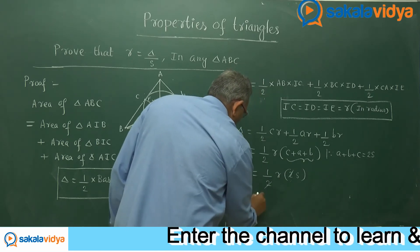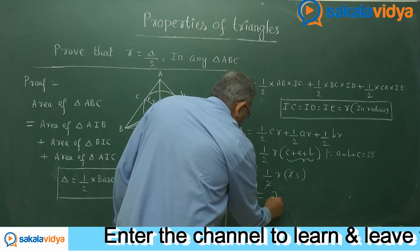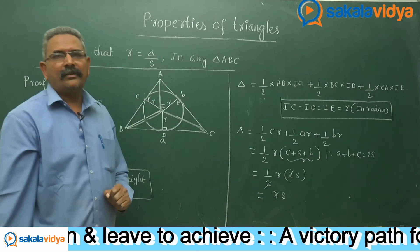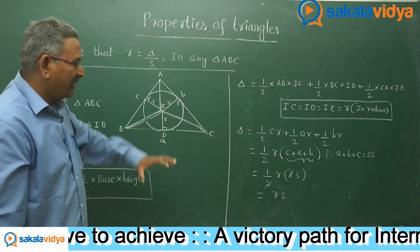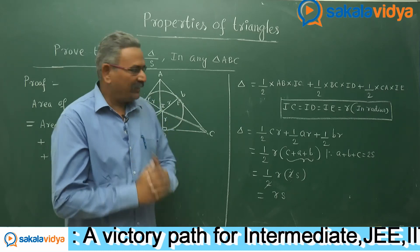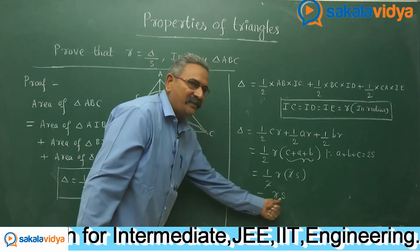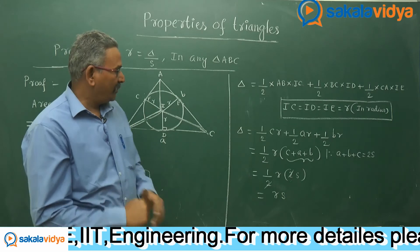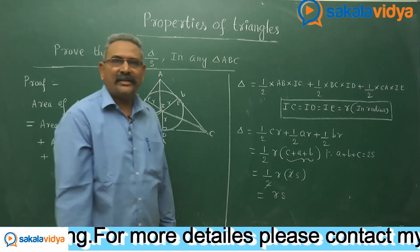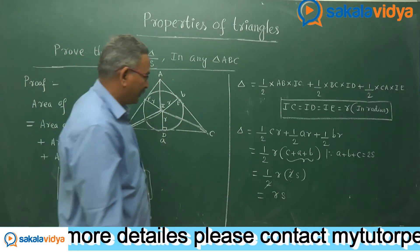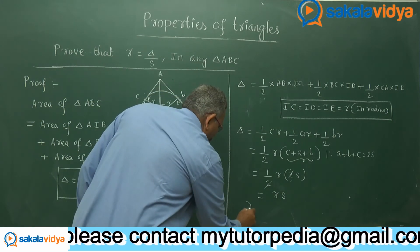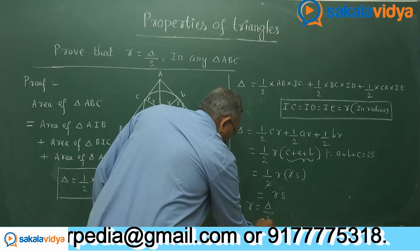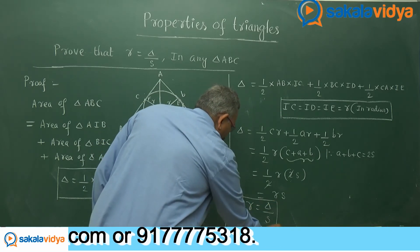The 2 and half cancel, giving us delta equals r times s. This is very easy to remember: delta equals r times s. So now we can write r equals delta upon s. The formula has been formulated.